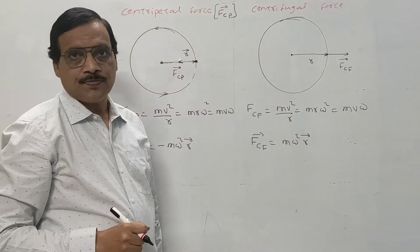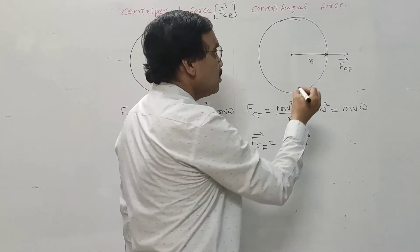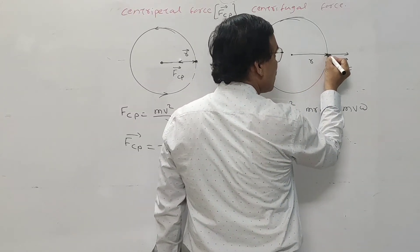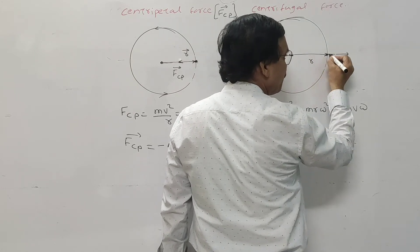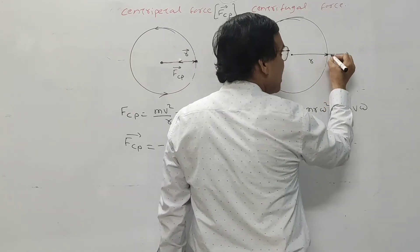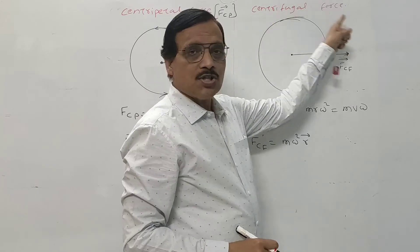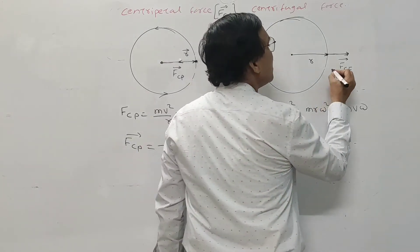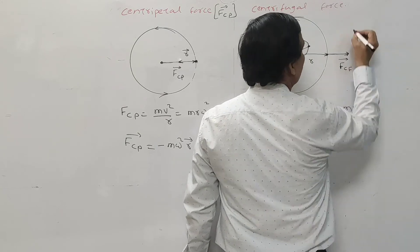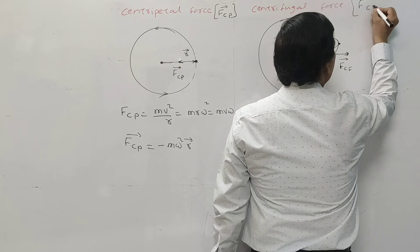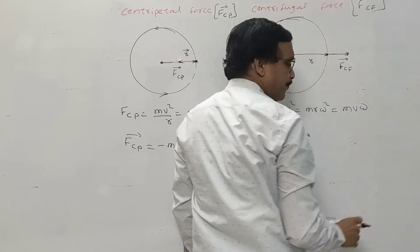The other force acts along the radius directed away from the center of the circle during circular motion. That force is called centrifugal force, denoted CF. These two forces are equal and opposite, so the particle moves along the circumference of the circle.